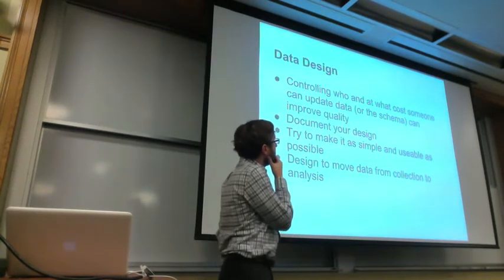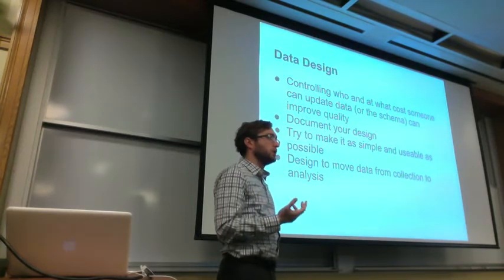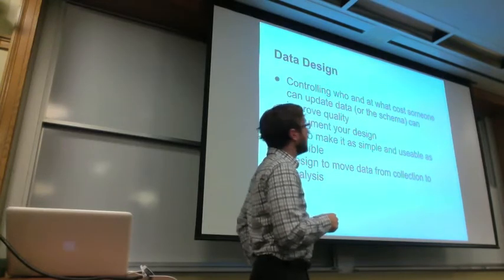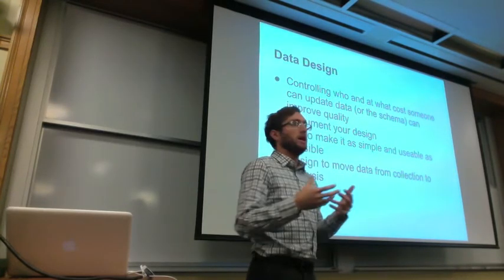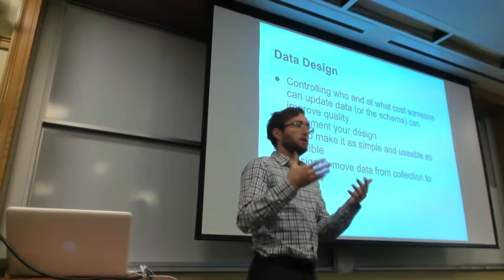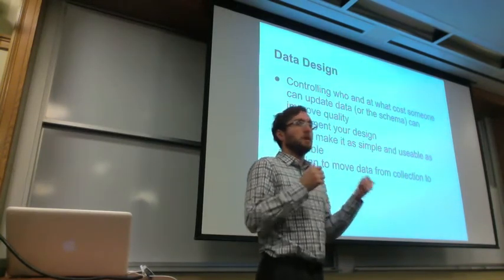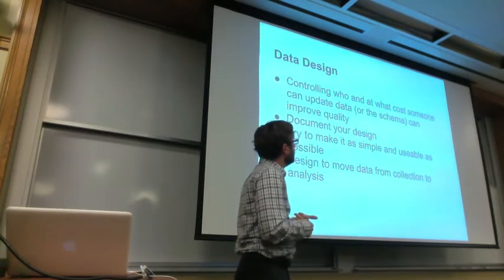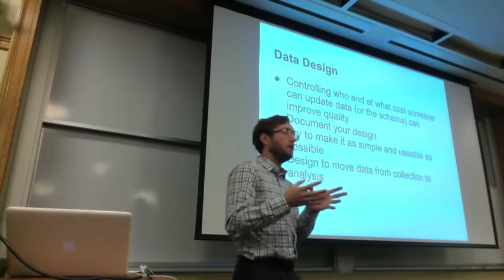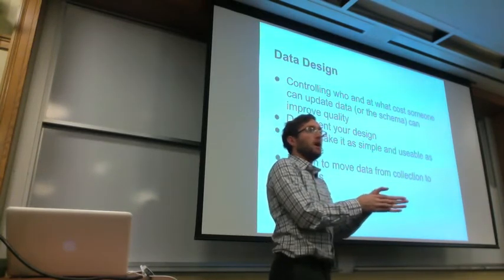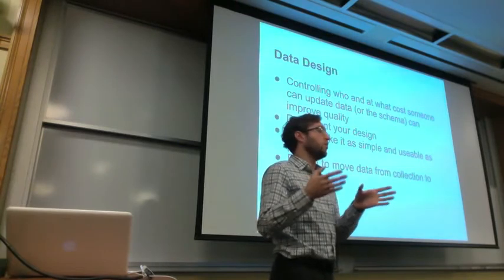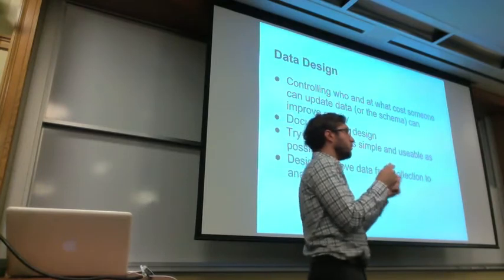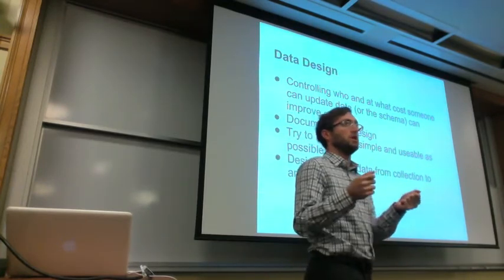One of the most helpful things in terms of making recommendations for a new way to organize data is controlling who and at what cost someone can update the data. If it's very easy in a cell to put in whatever you want, there's probably a 100% chance that people are going to put in whatever they want. If you have a cell where it's supposed to be male or female and everyone agrees, it could take maybe a week before someone starts putting in 'man' or 'woman.' As soon as you break those things, they become so much harder to work with.